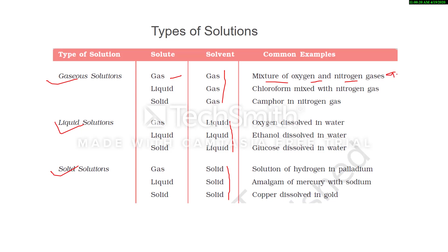For gaseous solutions: gas in gas — for example, a mixture of oxygen and nitrogen, generally this is air; liquid in gas — chloroform mixed with nitrogen gas; solid in gas — camphor in nitrogen gas. For liquid solutions: gas in liquid — oxygen dissolved in water; liquid in liquid — ethanol dissolved in water; solid in liquid — glucose dissolved in water. These three types are frequently used.